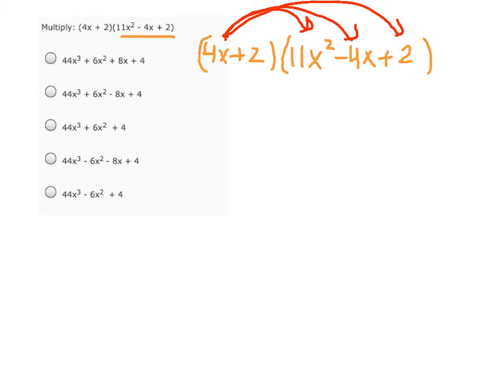So we have 4x times 11x squared. So 4 times 11 is 44. x times x squared gives us x cubed. For the second multiplication, we have 4x times negative 4x. So 4 times negative 4 is negative 16, and x times x is x squared. And then last, we have this 4x times 2. 4x times 2 is 8x.